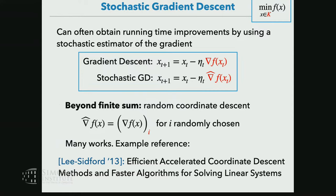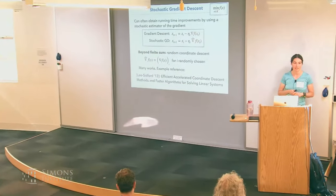Beyond finite sum, one more connection relevant to this program is random coordinate descent. Instead of exploiting the finite sum structure, the idea is that we can achieve speedups for important problems by computing just a single coordinate of the gradient — using the gradient entry for a randomly chosen index, not necessarily uniformly, according to some distribution. This allows us to get faster running times for very important problems. Aaron and Instat's paper is a great reference for that. I'll stop here for this lecture; when we come back, we're going to talk about accelerated gradient descent.